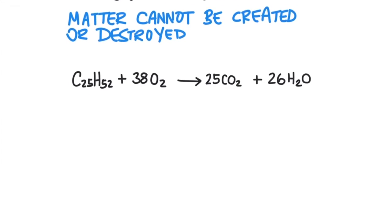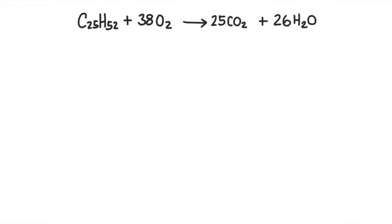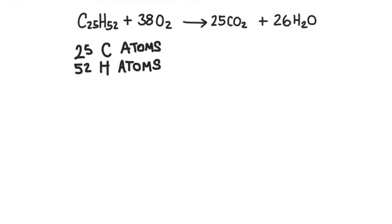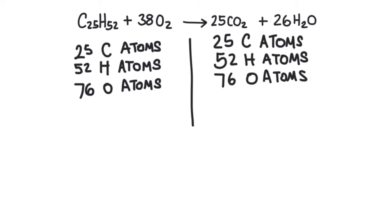So in this equation, there are 25 carbon atoms, 52 hydrogen atoms, and 76 oxygen atoms on the left side. And on the right side, there are 25 carbon atoms, 52 hydrogen atoms, and 76 oxygen atoms.